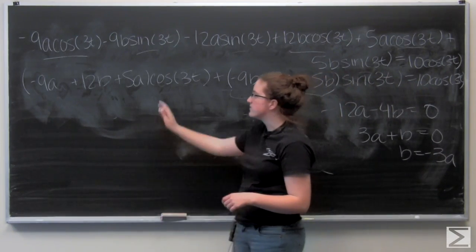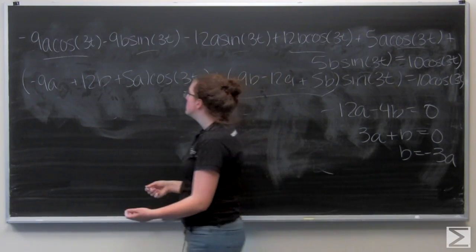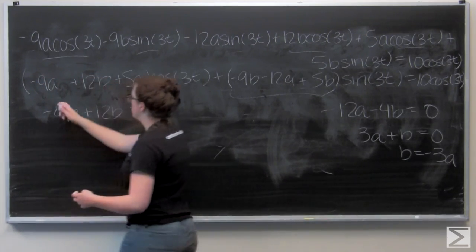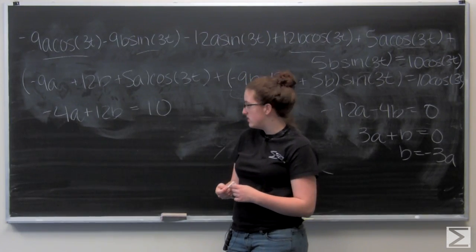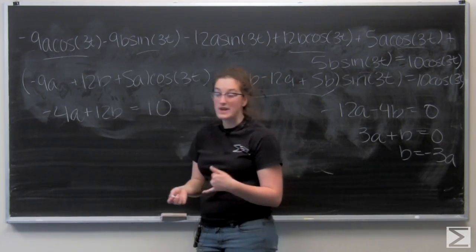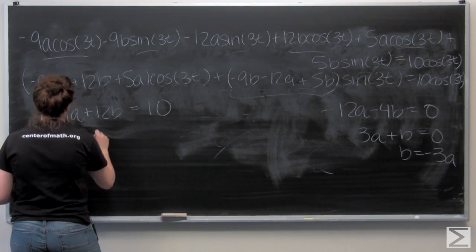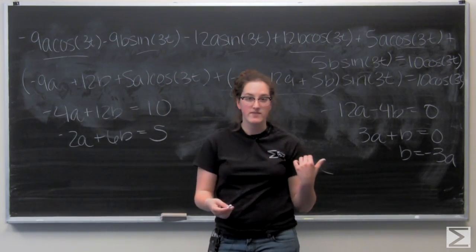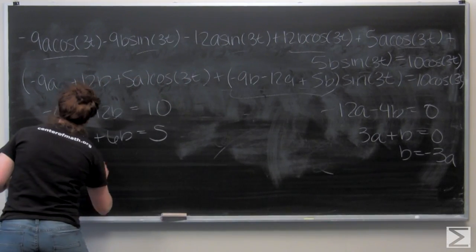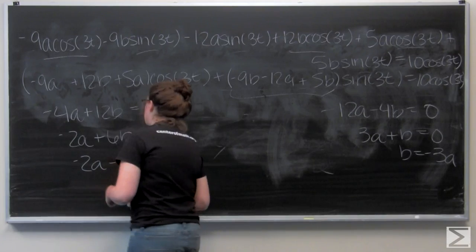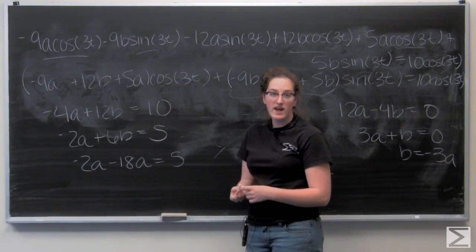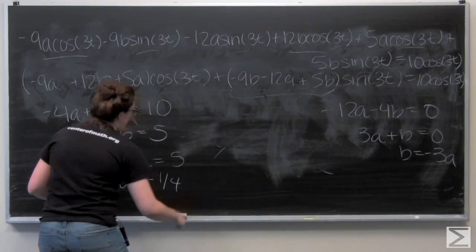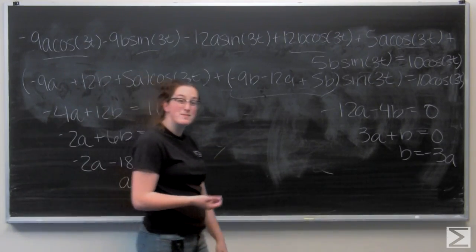Now let's look at the coefficient for cosine. I know that needs to be equal to 10. So I've got negative 4a plus 12b equals 10. And I can go ahead and divide that whole equation by 2. So negative 2a plus 6b equals 5. Now let's plug in negative 3a for b. So that tells me that negative 2a minus 18a equals 5, and a equals negative 1 fourth. And I can plug that in over here, and that will tell me that b equals 3 fourths.